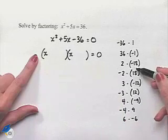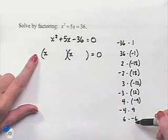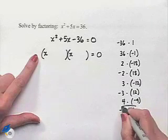And we want factors of 36 that when subtracted will give us 5. So if we look down our list, which pair will actually fit that bill? Well, it's going to be this one.